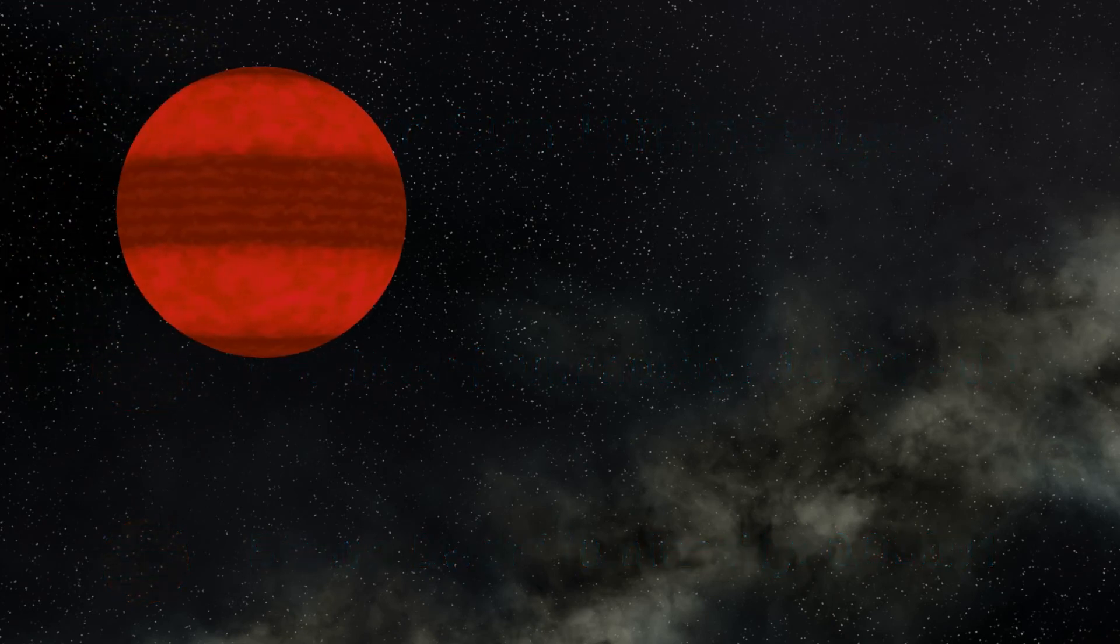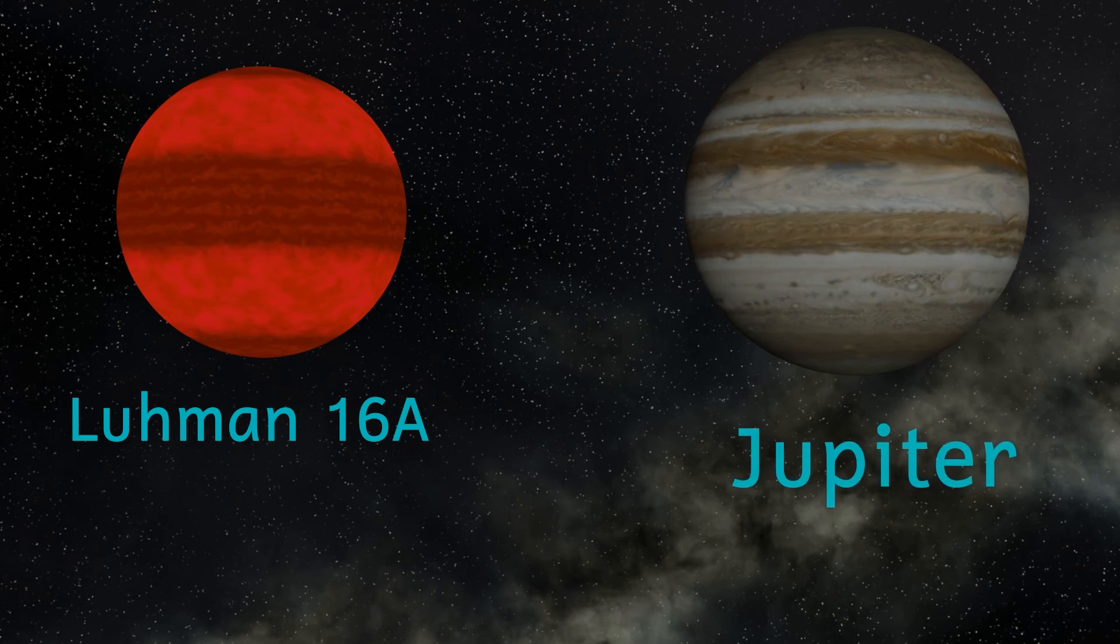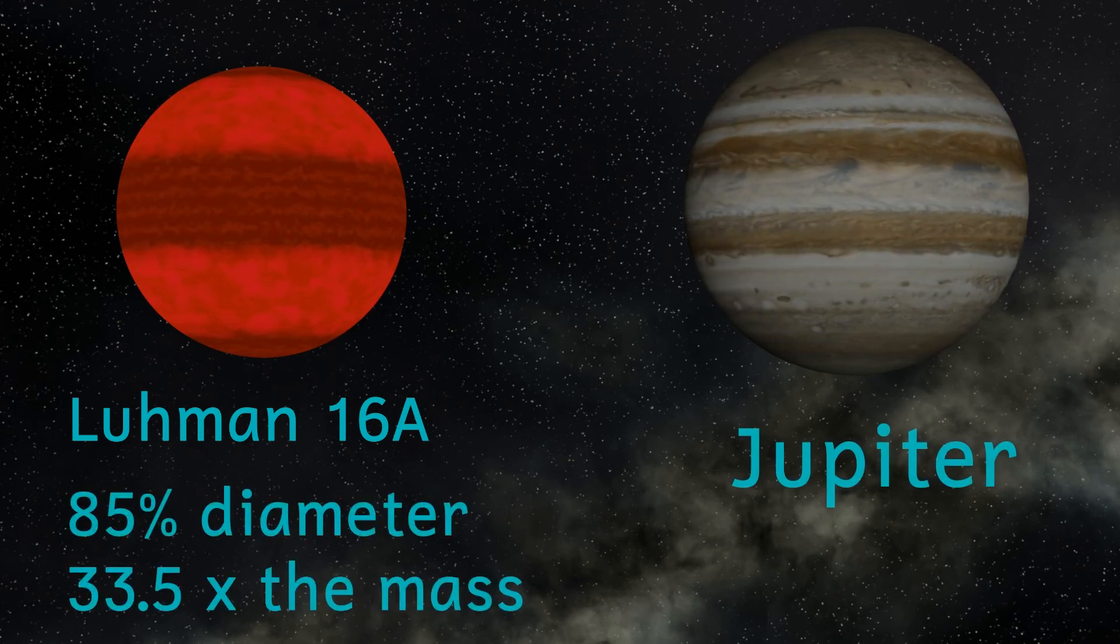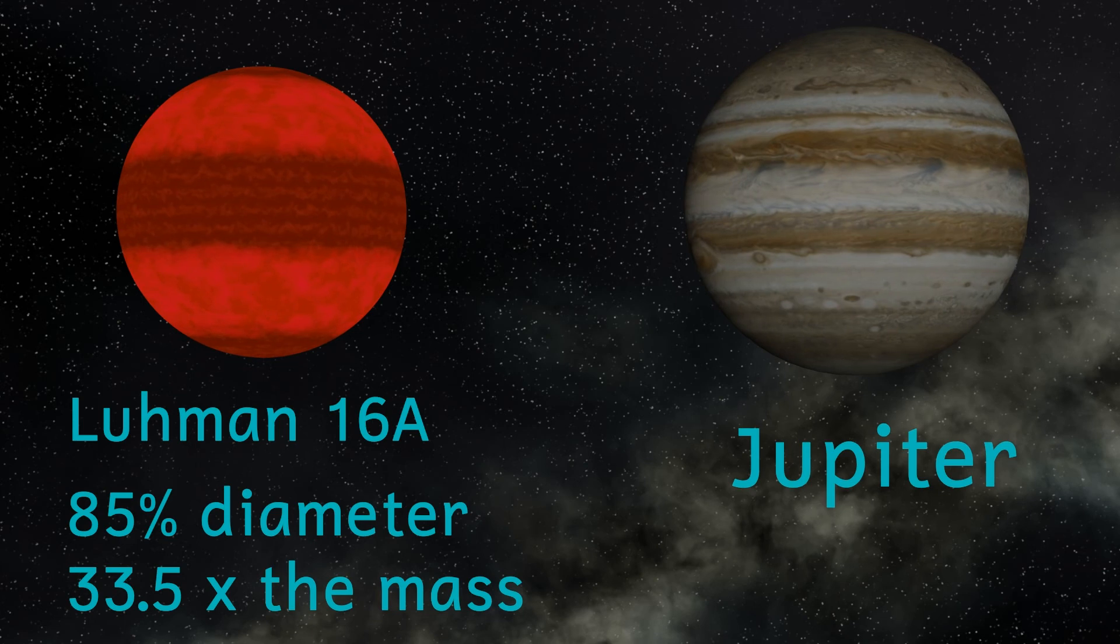Lumen 16A is an L-type brown dwarf. It has a radius slightly smaller than, but a mass 33 and a half times more than the planet Jupiter. This means that it's much more dense than the planet and therefore why it's a brown dwarf.